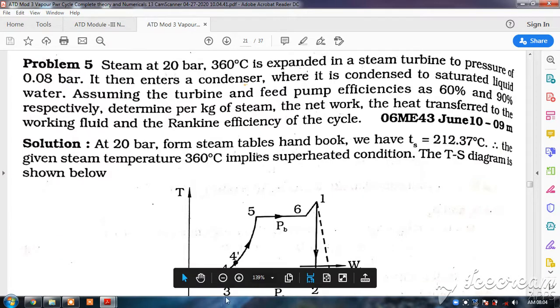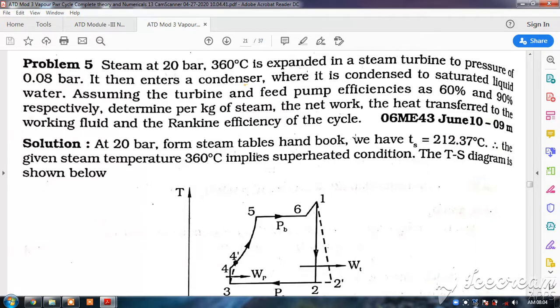So this point 3 is on the saturated water line. At 20 bar from steam tables, we have T saturation equal to 212 degrees centigrade. The given temperature 360 degrees is higher than 212 degrees centigrade. Hence, it implies that the steam is at superheated condition.